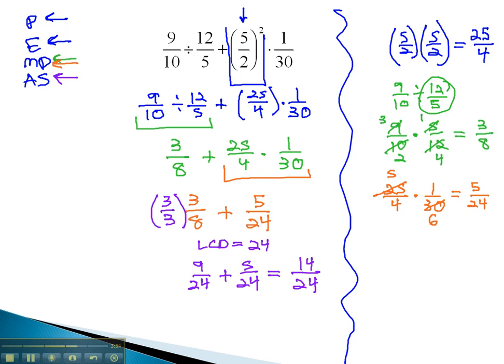With addition, we always reduce at the end. Reducing 14 over 24, both are divisible by 2, gives us 7 twelfths for our final solution.